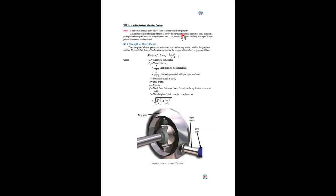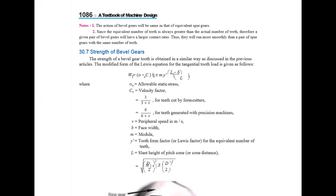Note that the action of bevel gears will be the same as that of equivalent spur gears. Since the equivalent number of teeth is always greater than the actual number of teeth, a given pair of bevel gears will have a larger contact ratio, and thus they will run more smoothly than a pair of spur gears with the same number of teeth.